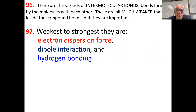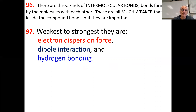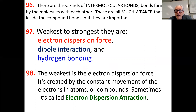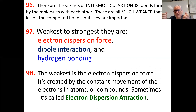Every single atom in every single molecule has some electron dispersion force. It's really weak compared to everything, but it's important and makes a difference sometimes. Dipole interaction is when you have polar bonds with polar molecules. And then finally, hydrogen bonding, which is like super duper dipole — we'll talk about that in a couple minutes. The weakest is caused by the constant movement of electrons in atoms or compounds. Electron dispersion force is not really a bond, it's more of an attraction.